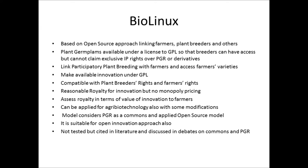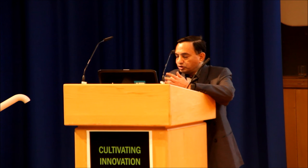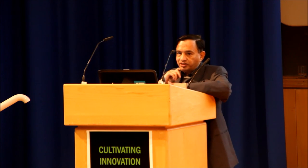Back in 2004, when I wrote my PhD thesis, I developed a model called BioLinux. BioLinux is based on an open source approach linking farmers, plant breeders, and others. In this model, plant germplasm is made available under a GPL-like license so that plant breeders can have access but no exclusive rights on PGR or derivatives will be granted. It links participative plant breeding with farmers, makes available innovation under GPL, is compatible with plant breeders' rights and farmers' rights, provides reasonable royalty for innovation but no monopoly pricing, assesses royalty in terms of value of innovation to farmers, and could be applied for agri-biotechnology with some modifications. This model considers PGR as commons and applies the open source model; it could also be used for an open innovation model. It has not been tested as it was more of a theoretical model, but people have developed it further and it has been discussed in the literature.